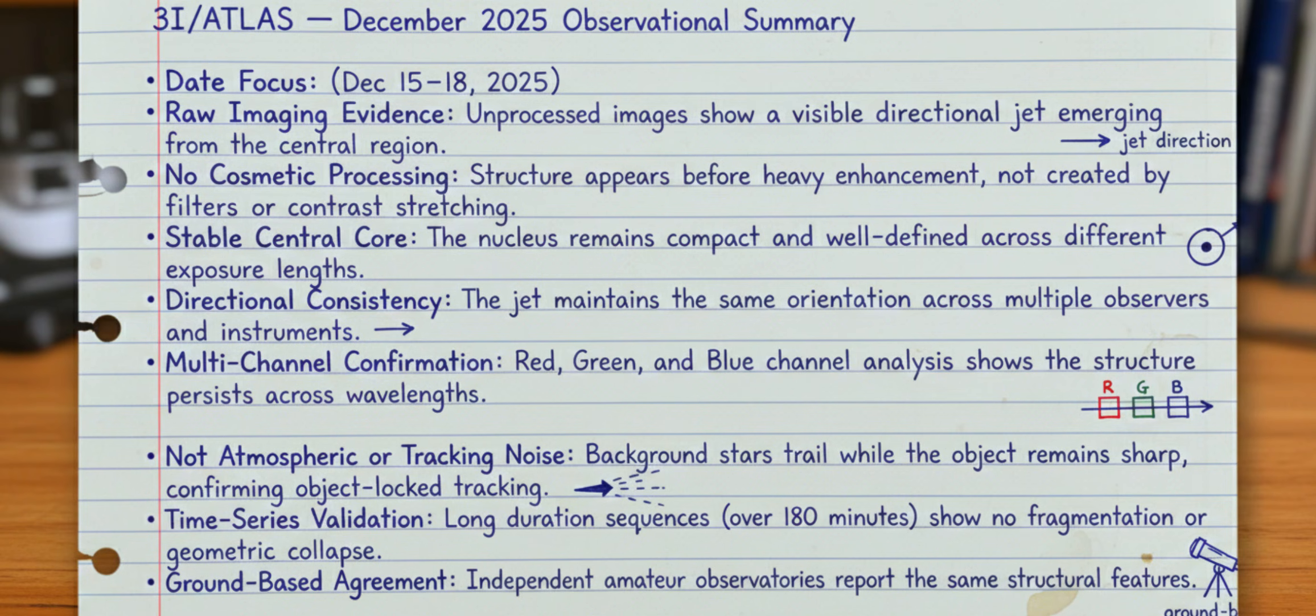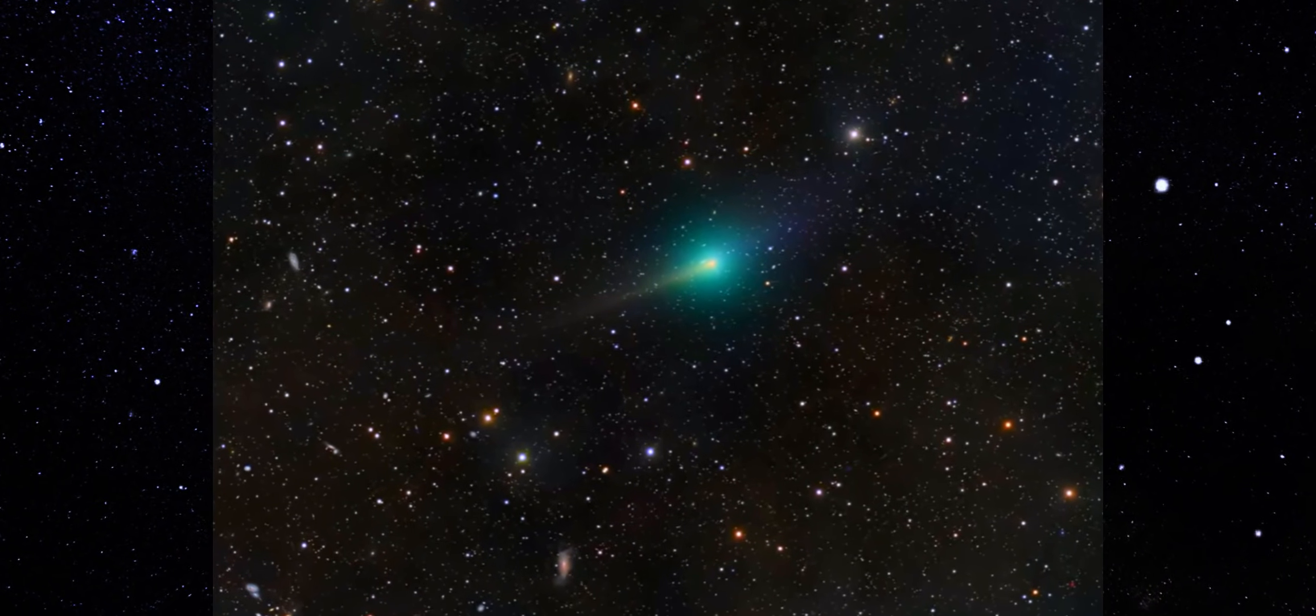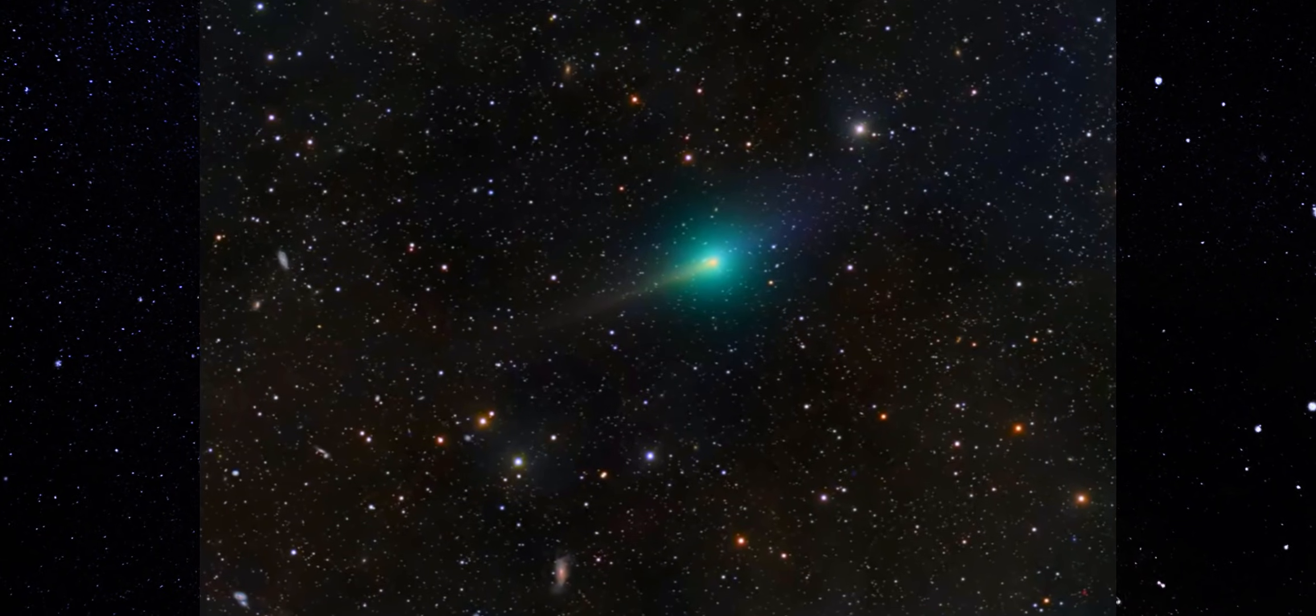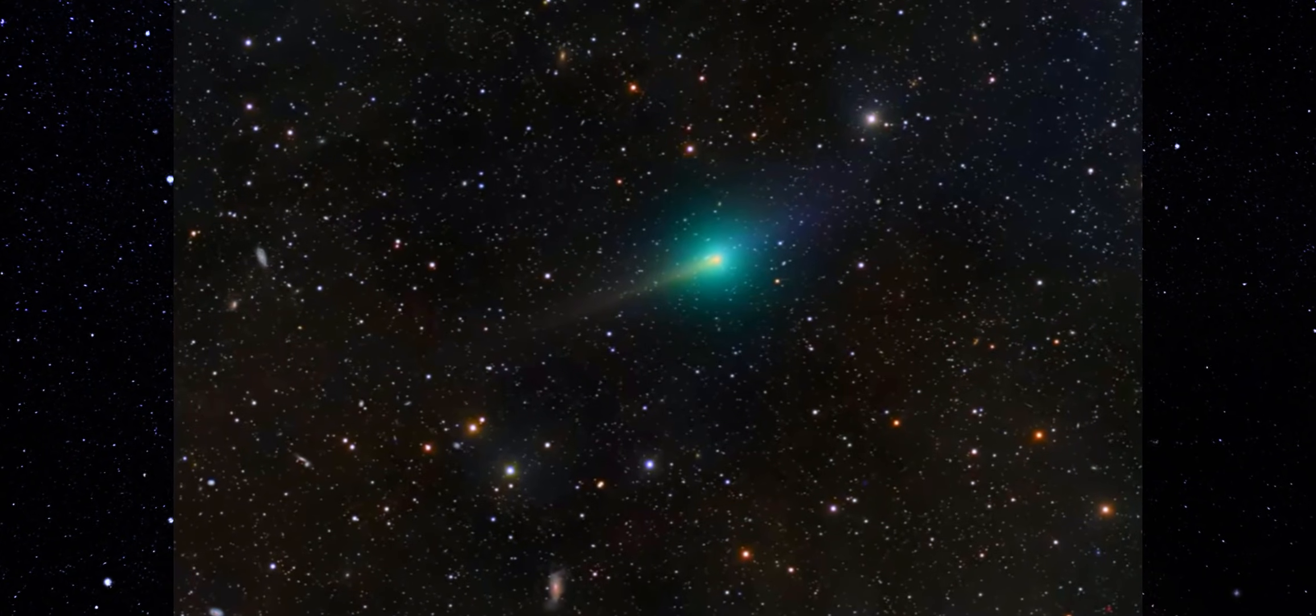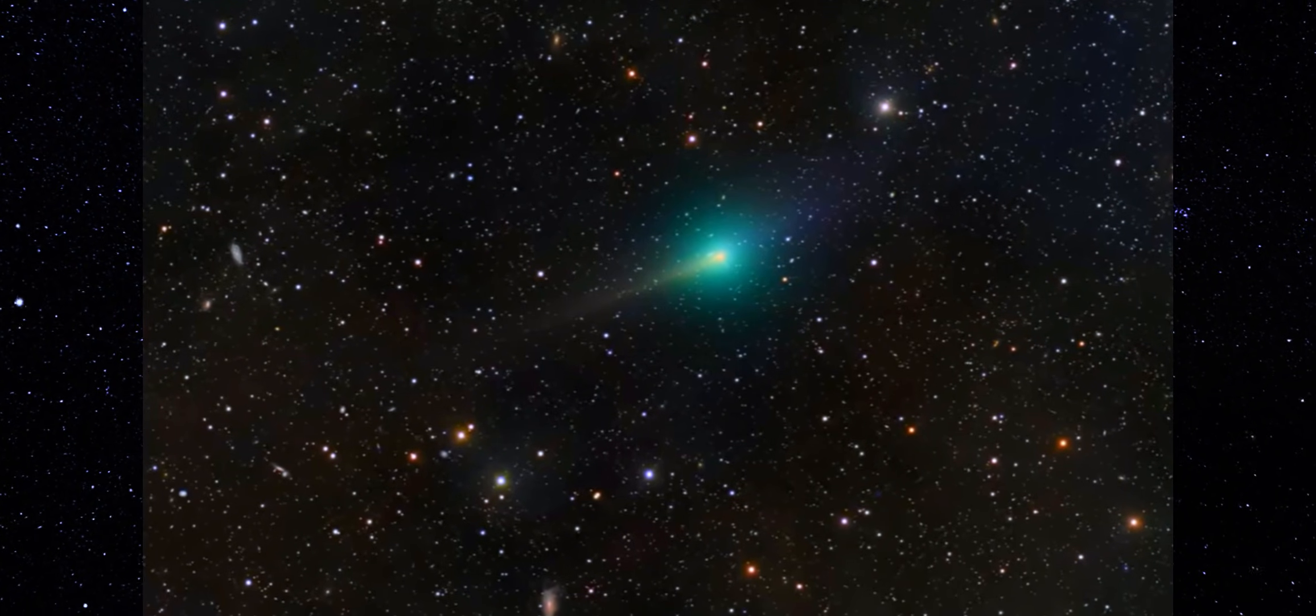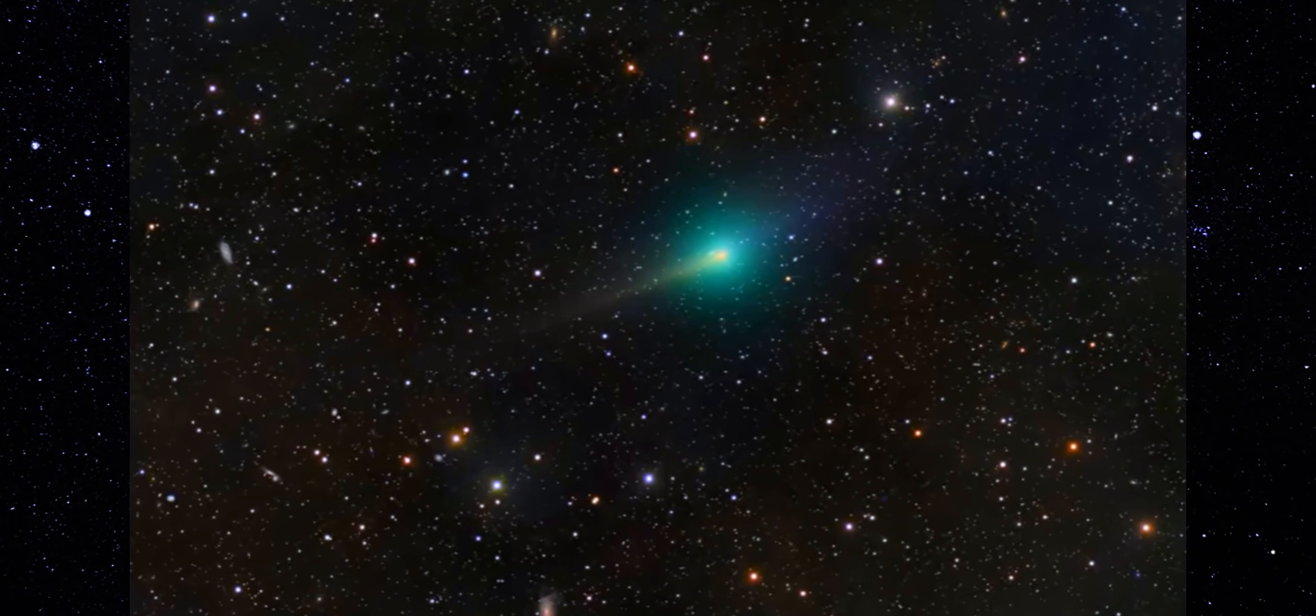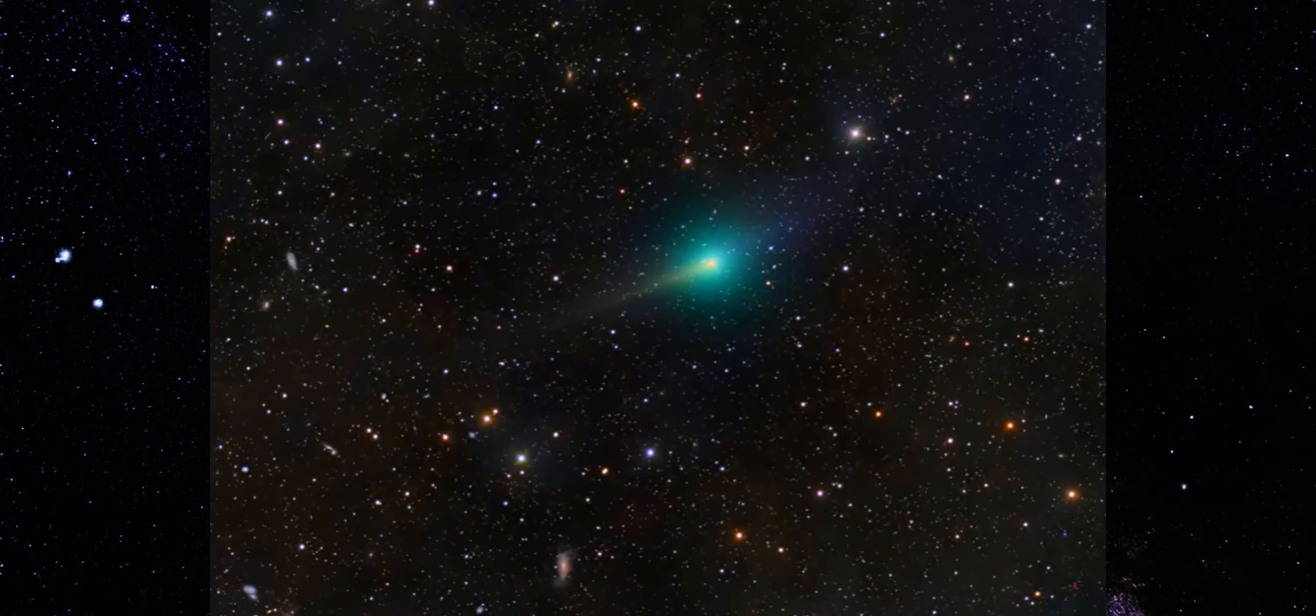When the data is split into red, green, and blue channels, the feature doesn't disappear. It persists across wavelengths, which tells us this isn't a single-band noise effect or a sensor glitch. In long time series sequences, stretching out over hours, there's no collapse, no chaotic spreading, just steady behavior. And critically, the background stars trail while the object stays sharp. That confirms object-locked tracking. This structure exists in the sky, not in the software. When you put all of this together—time, wavelength, independent observers—the result is the same. The structure persists. And that's the part that deserves attention.